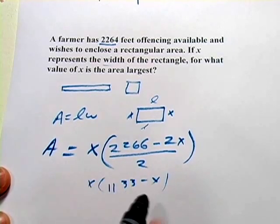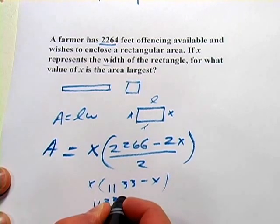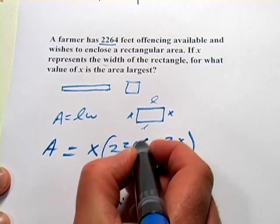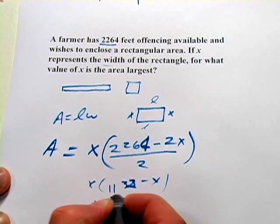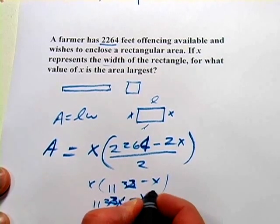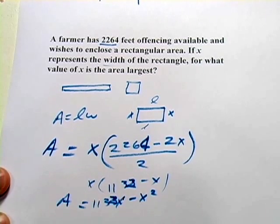When we multiply the x through, we'd get 1133x. Oops, I copied the number wrong. It's actually 264. So that would be 1132x minus x squared. And that is our area function.